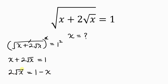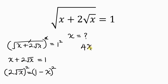To get rid of this square root we take the square of both sides again. This square affects the 2 and also the square root of x. So 2 squared gives 4, and the square root of x squared — the square cancels the square root — leaving x. So I have 4x on the left hand side.